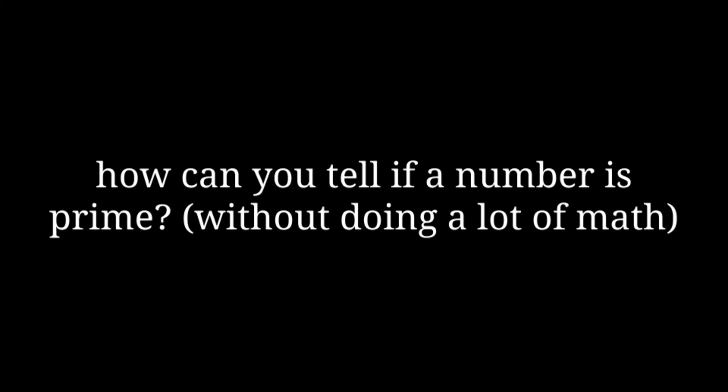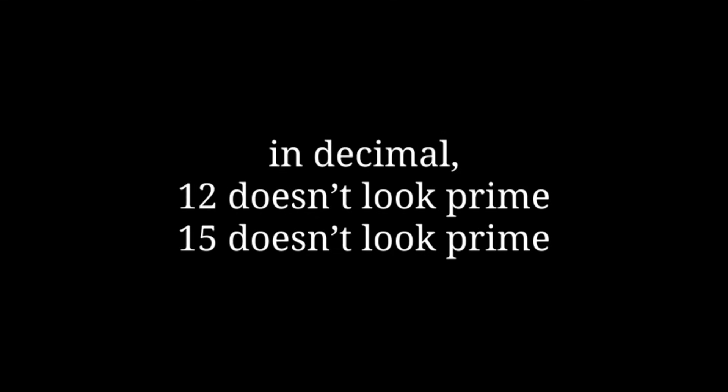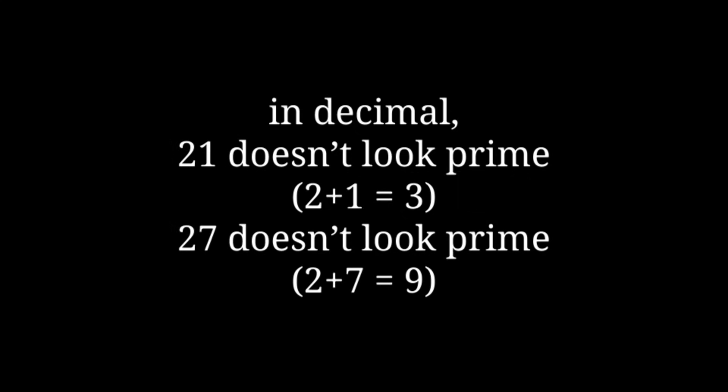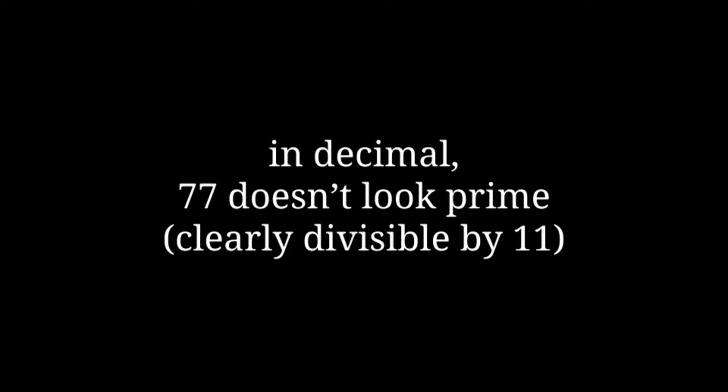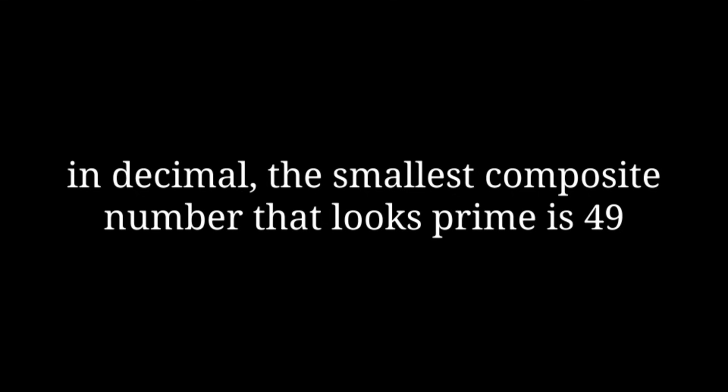Here's one situation you might care about: how can you tell if a number is prime? A prime number is a number with no factors other than one and itself. Let's say you want to know if a number is prime quickly, just by looking at it — no complicated division required. In decimal, you can easily tell if a number is even and if a number is divisible by 5 by looking at the last digit. So 12 doesn't look like a prime number, and neither does 15. You can also add digits together and see what factors a number has in common with 9. 21 doesn't look prime, and neither does 27. You can also recognize small factors of 11 pretty easily, because they're two-digit numbers where both digits are the same — 77 doesn't look like a prime number. Using these simple methods, the smallest number that looks prime but isn't really is 49 in decimal. There's a good chance you might just recognize that as 7 squared, but if you don't, there's no easy way of figuring that out just by looking at it.